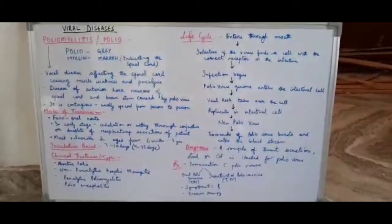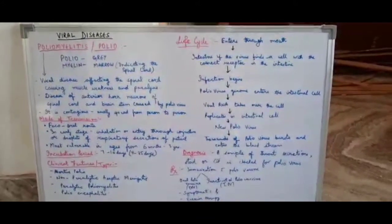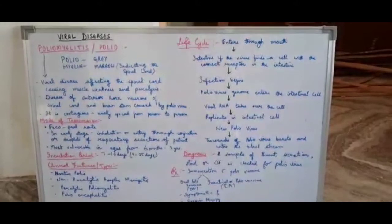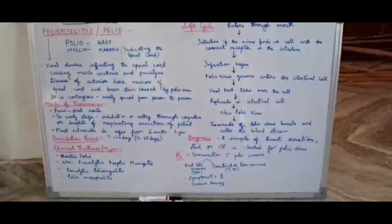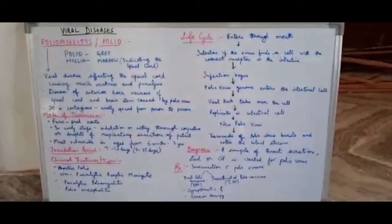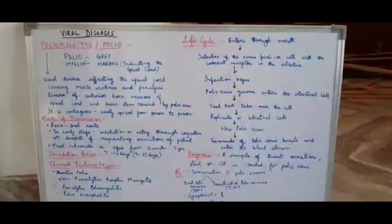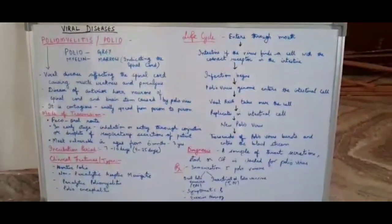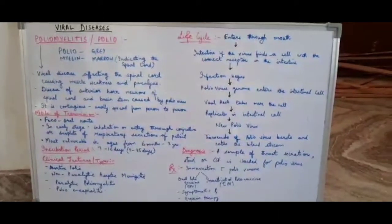Hello everyone, today we will start with the next topic on viral diseases. I will start with poliomyelitis, which you have heard commonly called polio. Poliomyelitis is made of two words: polio means gray, and mylene means marrow or spinal cord.